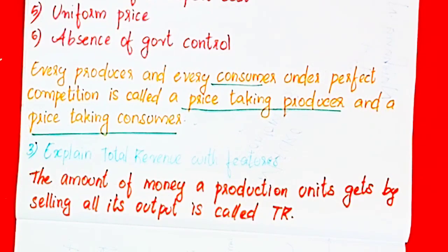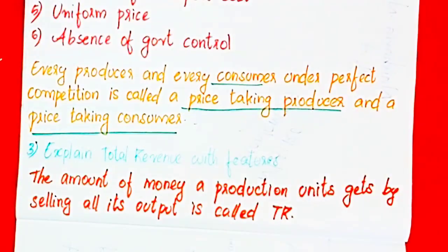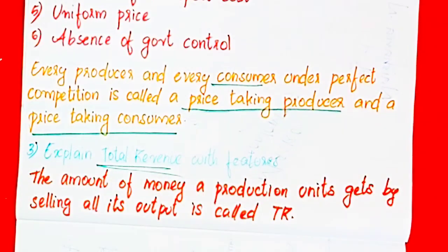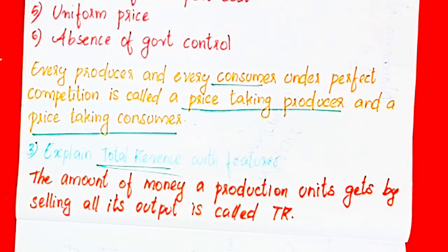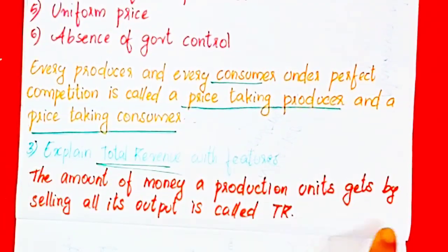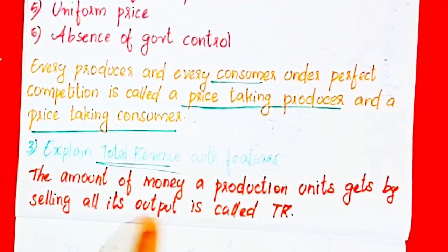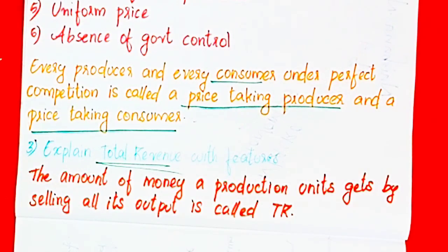The next topic is Total Revenue (TR). We will talk about total revenue. The amount of money a production unit gets by selling all its output is called total revenue. What is total revenue?